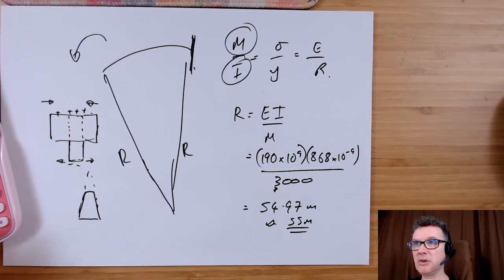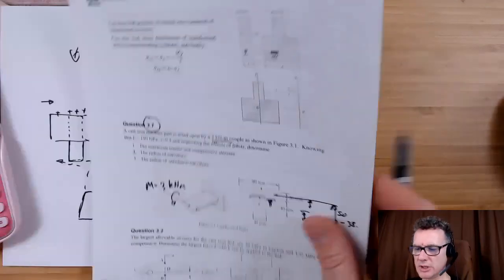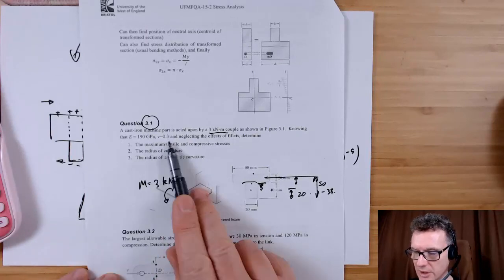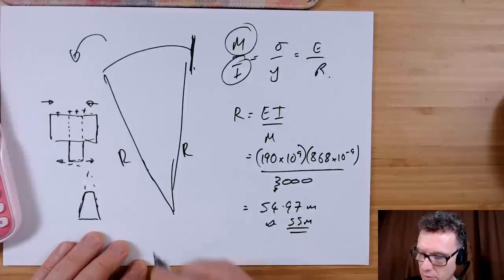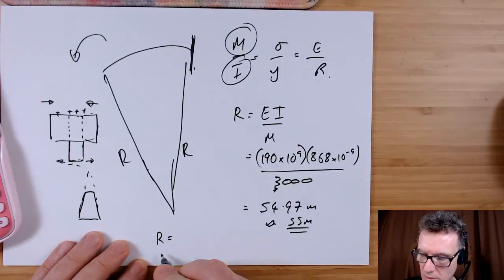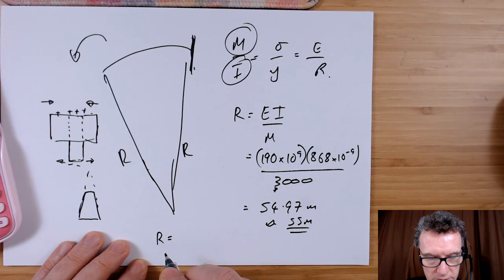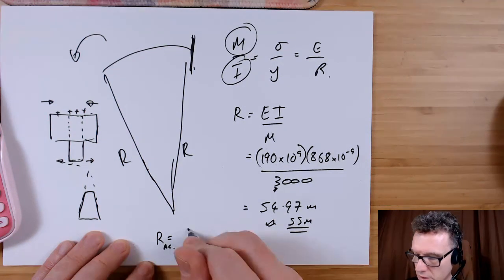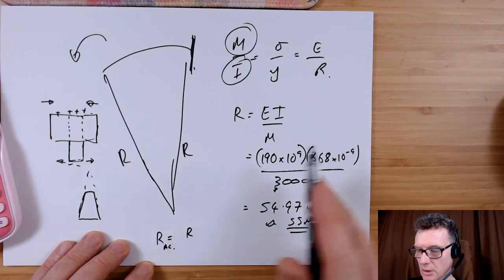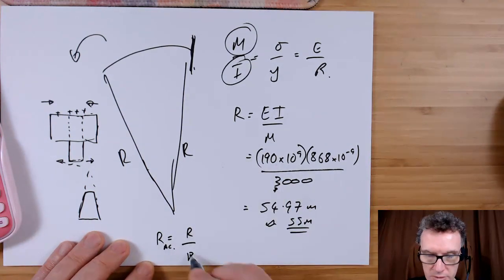So the radius of curvature, I'm expecting to be larger. Surprise, surprise. How am I going to find it? I simply take my other radius of curvature, and I call this the anticlastic curvature, which is your radius of curvature for your neutral axis, and divide it by Poisson's ratio.